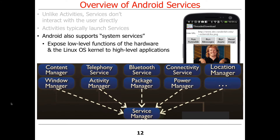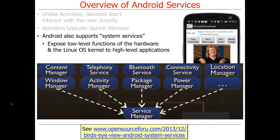In addition to user-level services, there are system services that expose low-level functions of the hardware and operating system to higher-level applications. Examples include the window manager, telephony service, activity manager (which routes intents to the right components), package manager, location manager, power manager, and others. These are typically written in C and C++, and they communicate with Java-based activities or services via the binder framework.